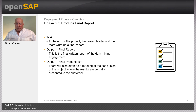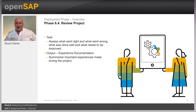The output can also include a final presentation to the customer. Finally, you need to review the project — assess what went right and what went wrong, what was done well and what needs to be improved. You should create an experience document that summarizes any important experiences during the project. For example, pitfalls, misleading approaches, or hints for selecting the best suited data science techniques in similar situations should all be included in the report.